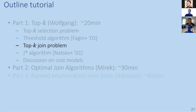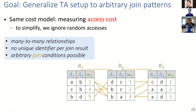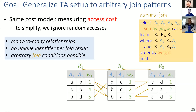What happens if we think more about joins? The model we looked at had a very simple join — one-to-one relationships. Now we assume the same access cost model but, to simplify, ignore random access so only sorted access — which makes the exposition simpler. We now have many-to-many relationships, so there are no longer IDs on which we join; we can have one-to-many and many-to-one, with arbitrary join conditions. To keep it simple, we assume a natural join, joining on A2 and A3. Again, we want to find the aggregate weight of the top K — here K equals 1.